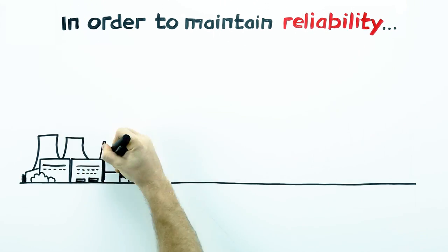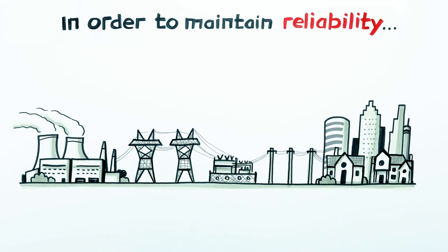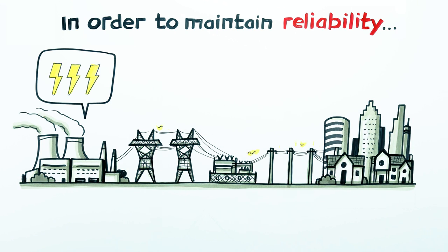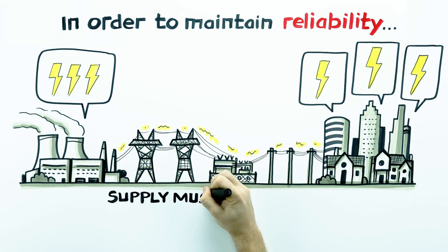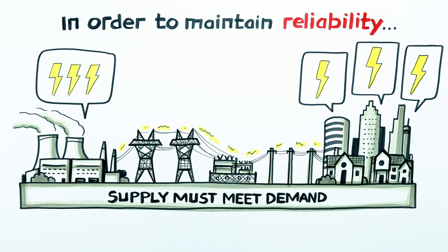In order to maintain reliability, the amount of electricity generated on the grid needs to match the amount of load on the grid instantaneously. In other words, supply must perfectly meet demand all the time to ensure quality energy distribution.